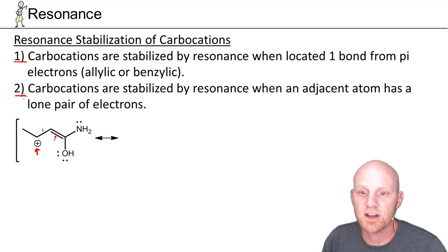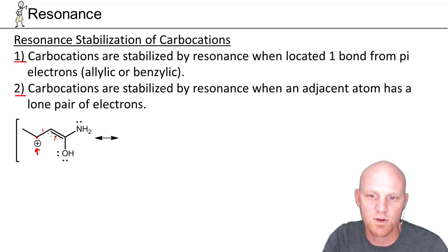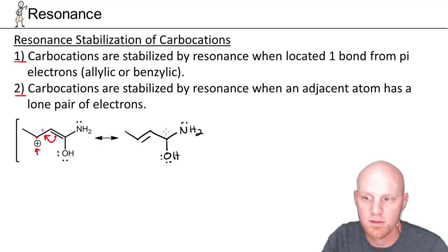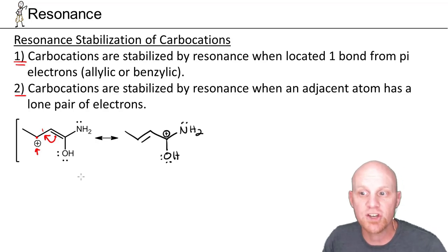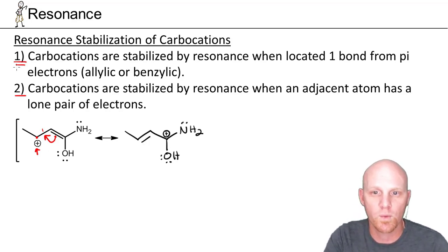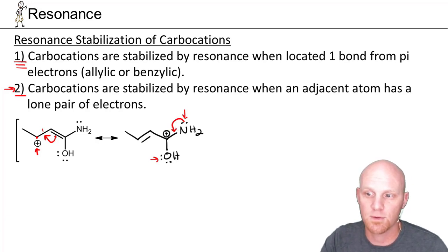Rule number two: carbocations will be stabilized by resonance if an adjacent atom has a lone pair of electrons. Moving the pi electrons to the adjacent bond gives this carbon its fourth bond. In the new structure, this carbon is no longer positive, but the carbon on the other side lost a bond and is now our carbocation. Checking rule one, it's one bond away from the electrons we just moved — moving those back gives the original structure. But under rule two, we have two adjacent atoms with lone pairs, and we can use them to make another bond by moving a lone pair into the adjacent bond.